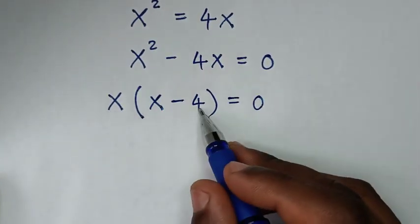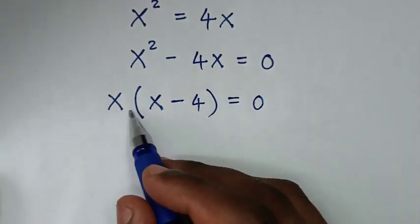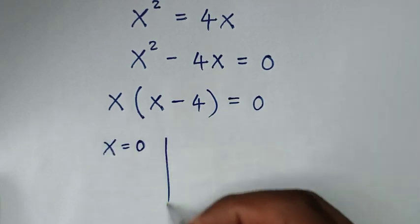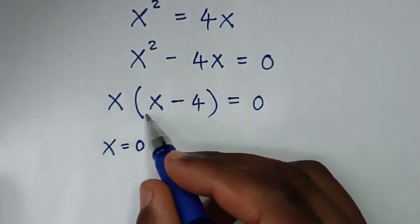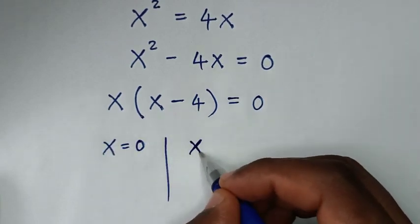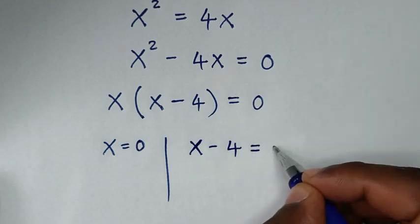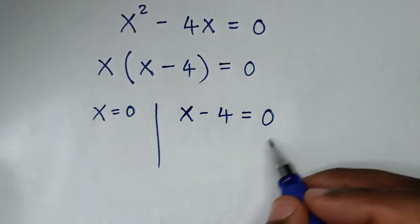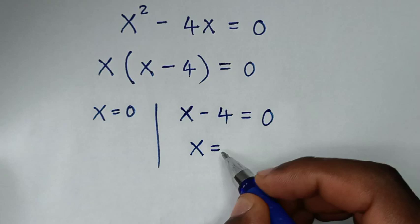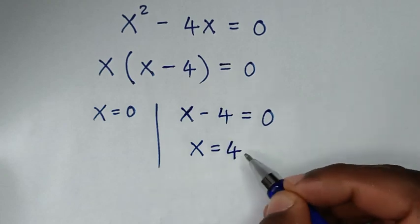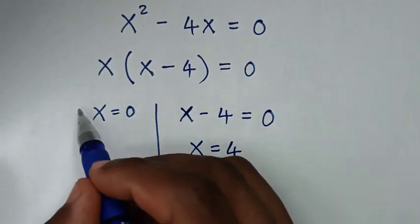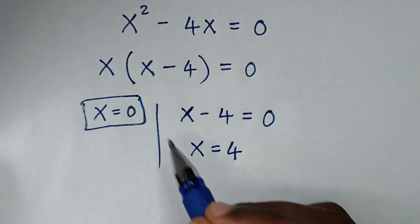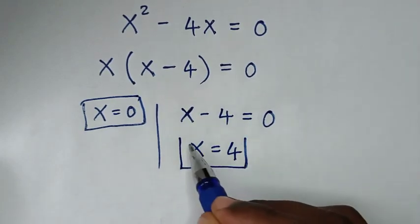From here we have two solutions. The first solution is x is equal to 0, and the second solution is x minus 4 is equal to 0. Taking negative 4 to the other side gives x is equal to 4. So we have two values of x: x equals 0 and x equals 4.